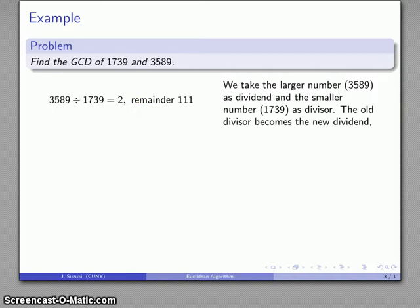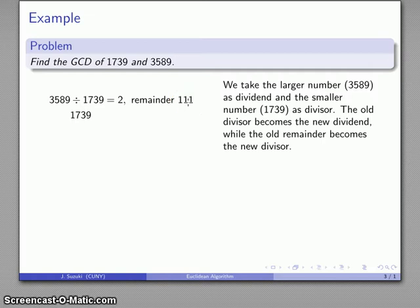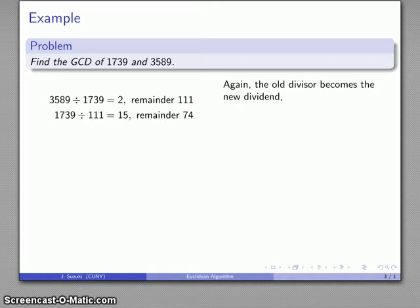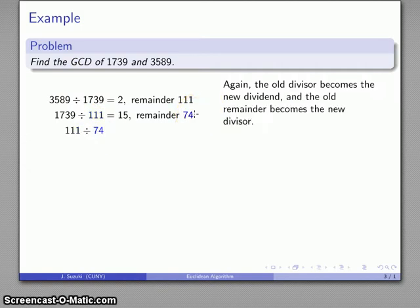I can continue at this point. The old divisor, 1,739, becomes the new dividend. The old remainder becomes the new divisor. So now I find the old dividend divided by the old remainder, and that's going to give me a quotient with a remainder. And once again, the old divisor, 111, is going to become my new dividend, and my old remainder is going to become the new divisor.